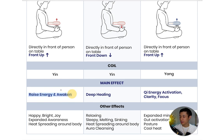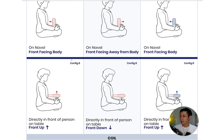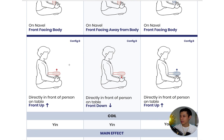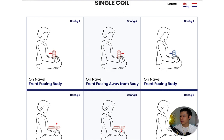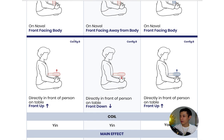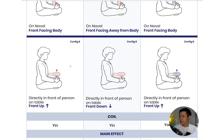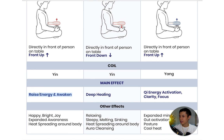For the effect of raising energy and awakening, there are two ways of placing it — configuration A or configuration B. The difference is minor and you get the same main effect. In configuration A, you're holding the yin coil in front of your navel, with the front facing your body. In configuration B, you have the yin coil flat horizontally — you can hold it in front of your navel, put it on the floor, or on a table in front of you, as long as the front of the coil is facing up.